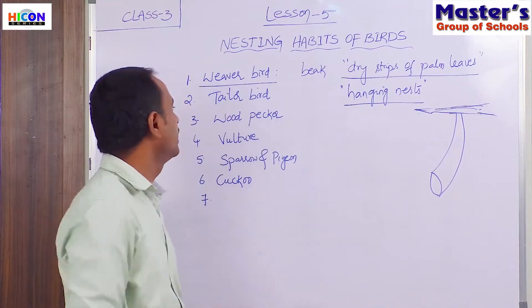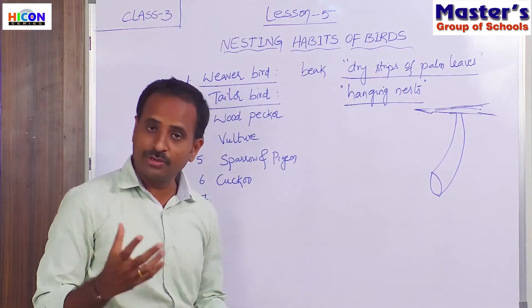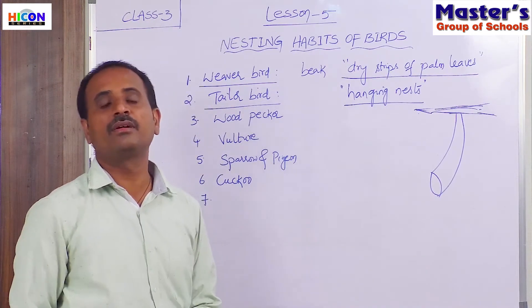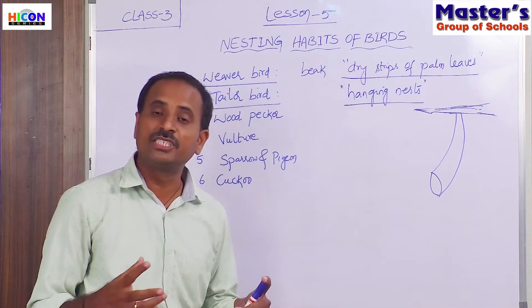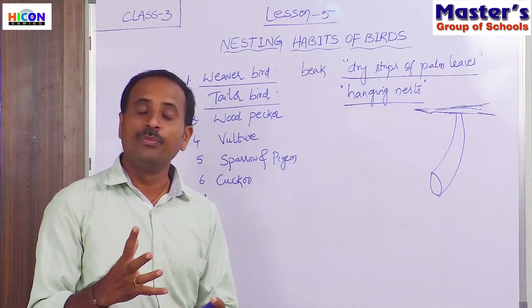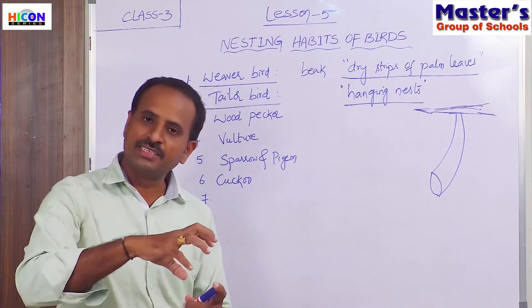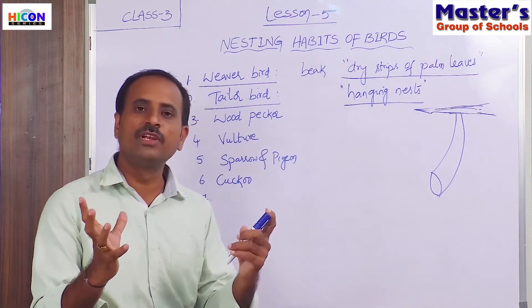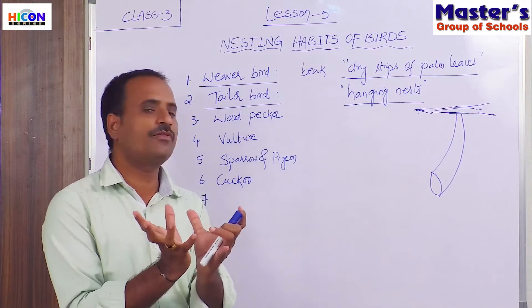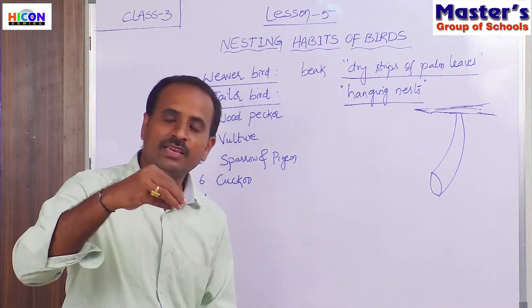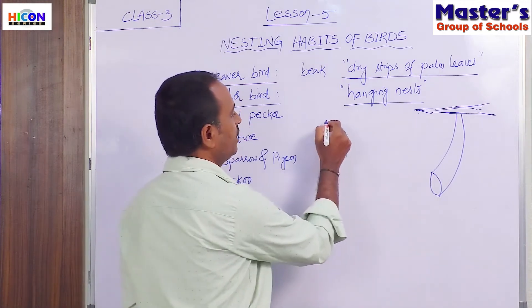The second type of bird is the tailor bird. So generally what does the tailor do? The tailor stitches cloth and makes garments. In the same way, the tailor bird stitches two leaves together and makes its nest. The two leaves are stitched and made in the shape of a closed shape, that is in the shape of a nest, and it will fill the gap between the two leaves with small, soft material like cotton.